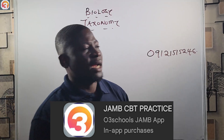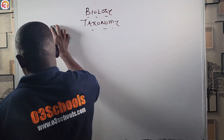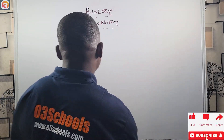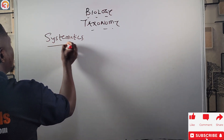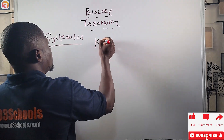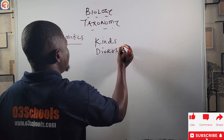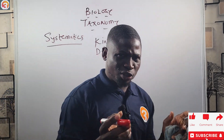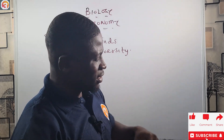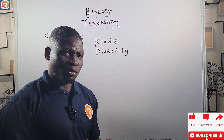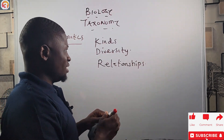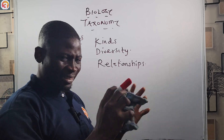Now we are talking about systematics. Systematics is the scientific study of the kinds and diversity of living organisms and the relationships among them.